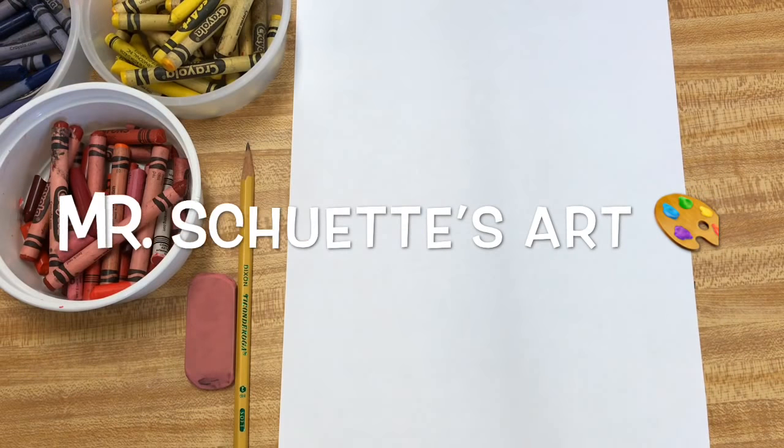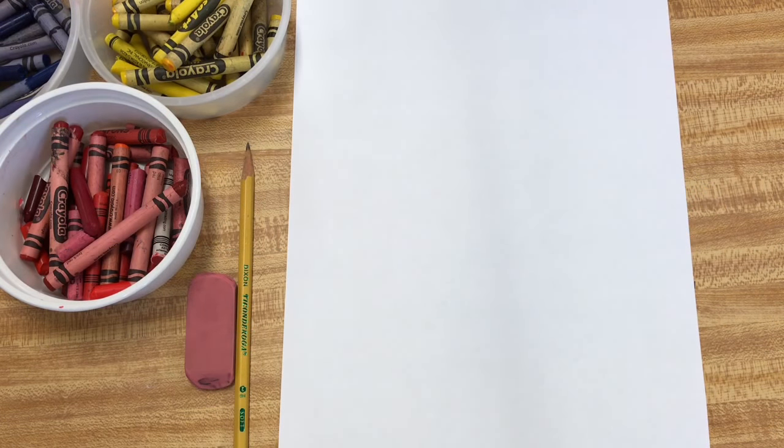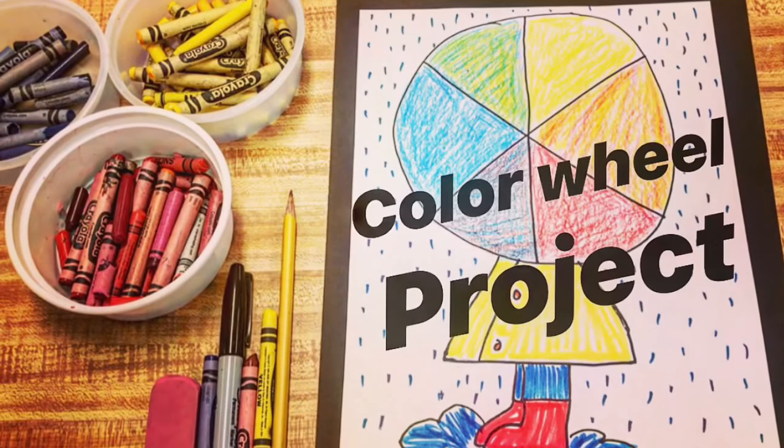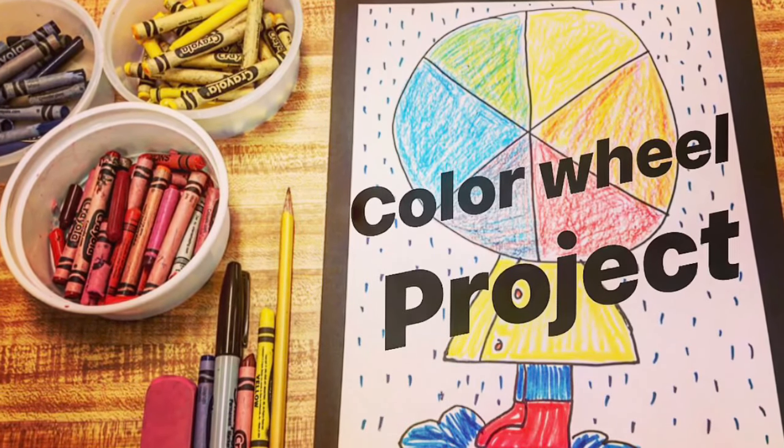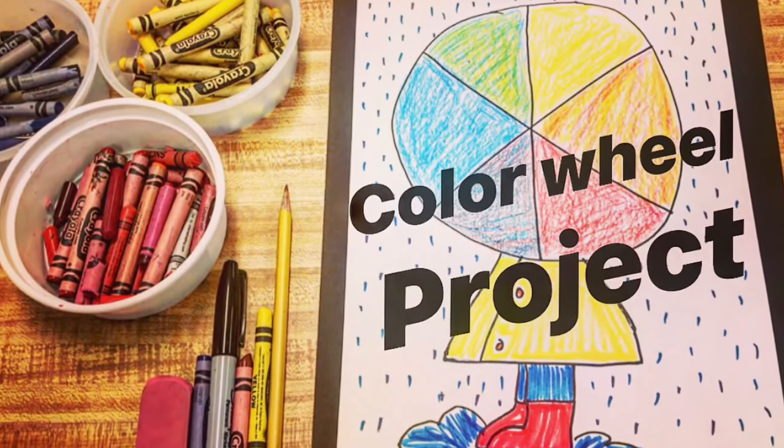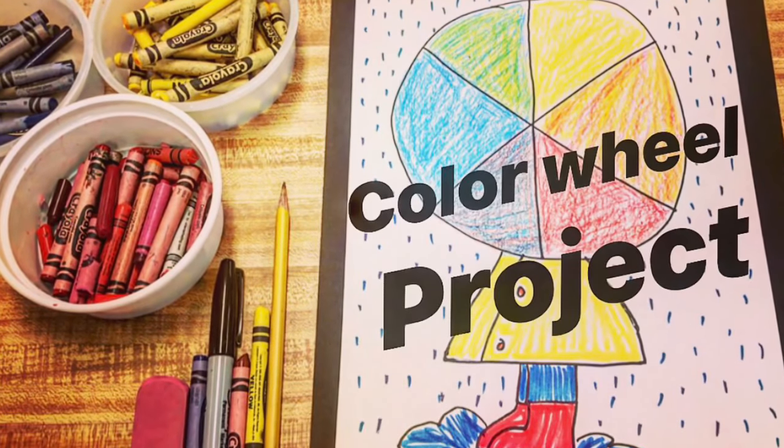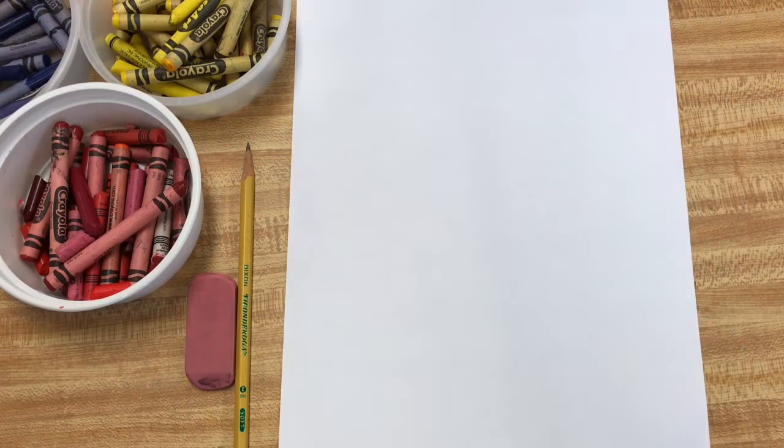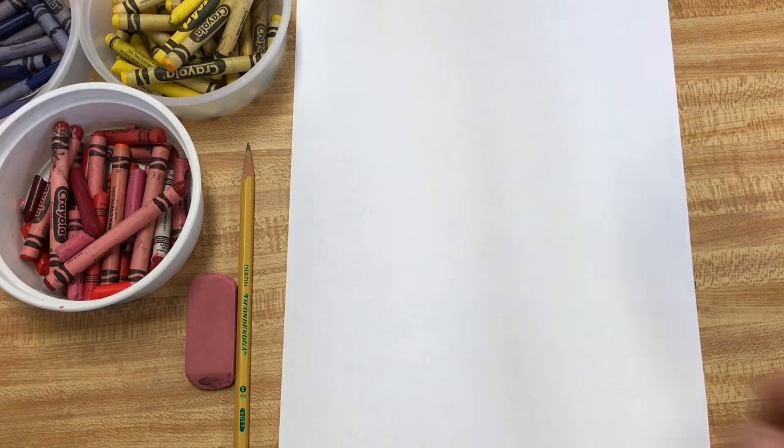Alright, welcome in today guys! Got a new little project for you having to do with a color wheel. This is a color wheel design that turns into almost like a little umbrella with some water and some boots splashing in water. It's a cool project that I just came upon on Google when I was typing in color wheel art projects.